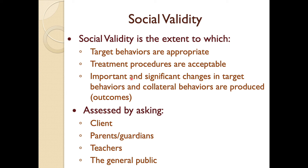Generally, the term social validity is used to determine outcomes — are these outcomes important? Did we achieve what we set out to achieve? Are the outcomes socially significant? You can assess social validity by asking clients, parents, guardians, teachers, or the general public, and examples of this appear throughout the Journal of Applied Behavior Analysis.